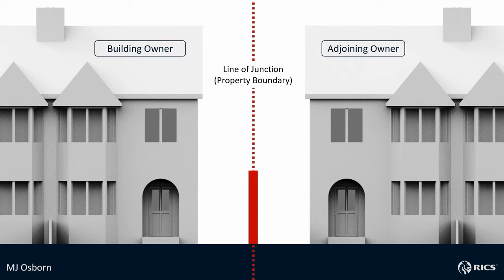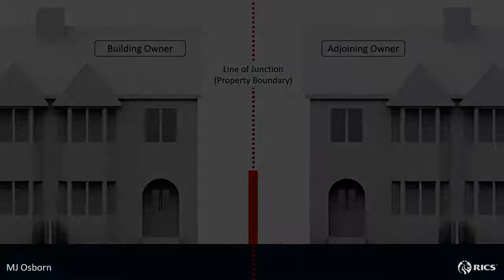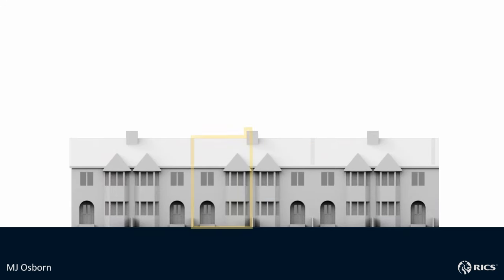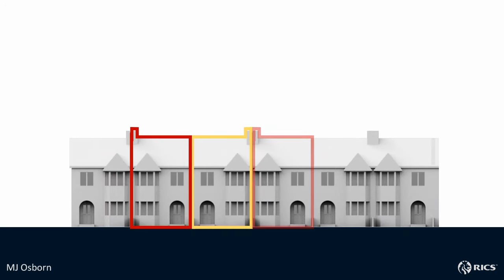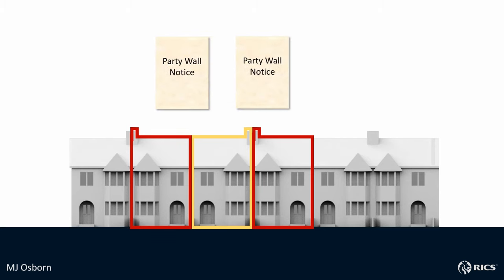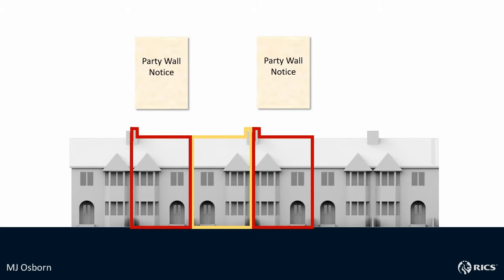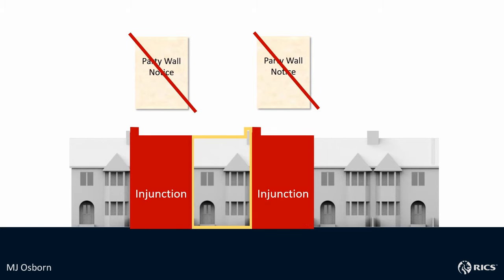When building up to or astride the line of junction, you must serve notice on the adjoining owner at least one month before commencing any building work. If your building work affects a party wall or structure, you will need to notify any adjoining owners in writing by serving a party wall or structure notice. If you fail to serve notice, there is a risk that adjoining owners may obtain an injunction.